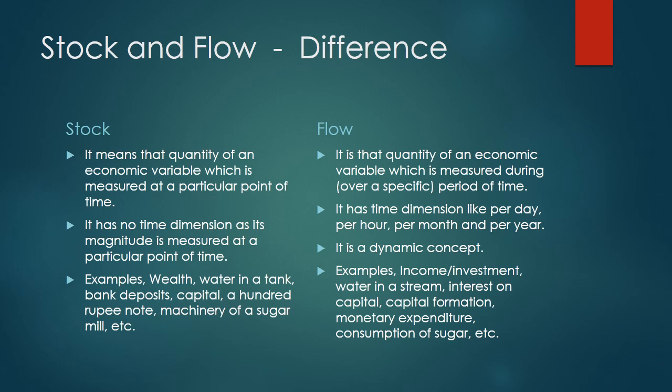The difference between stock and flow: stock variable is the quantity of an economic variable measured at a point of time — this phrase 'at a point of time' is very important. Flow is the quantity of an economic variable measured over a period of time — over an hour, a month, or a day. Stock has no time dimension, whereas flow has time dimension. Stock is static and flow is dynamic. Examples of stock: wealth, water in a tank, bank deposits. Examples of flow: income, investment, water coming through taps.